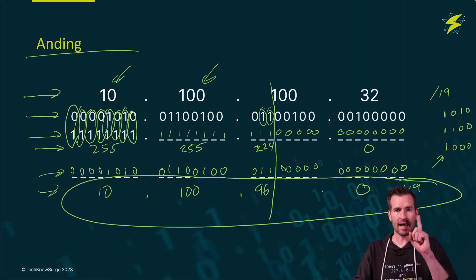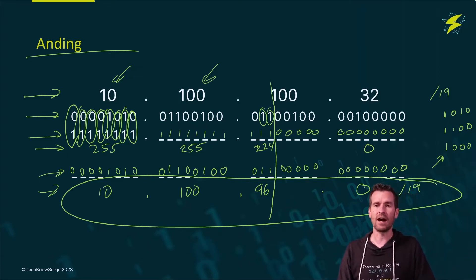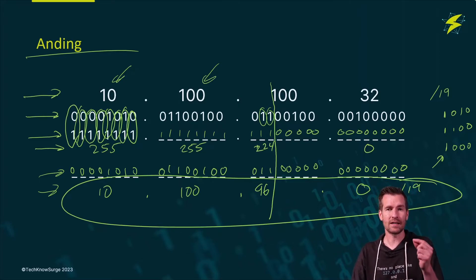If there's a 1 and a 1 in both the mask and the IP address, you'll get a 1. And all the other scenarios, you're going to get a 0. And that's how you figure out and how your computer figures out what network it's on by using the IP address and the mask.